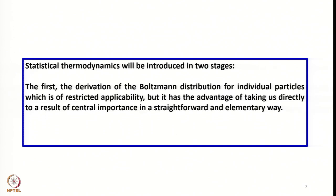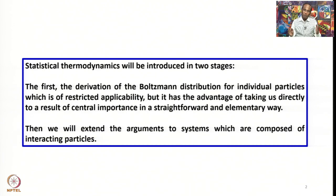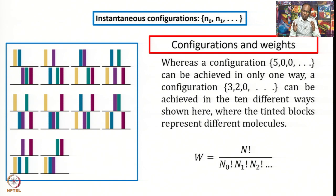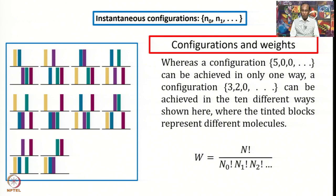What we did was start by discussing that statistical thermodynamics will be introduced in two stages. One was the derivation of the Boltzmann distribution of individual particles — we started with individual particles, which means restricted applicability, but that was the beginning point. Then we brought in interacting particles, achieved by considering ensembles. But before we derived any particular equation connected to thermodynamic quantities, we talked about configurations, instantaneous configurations, and their weight.